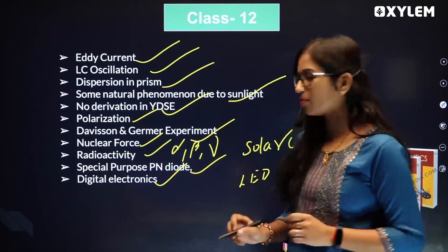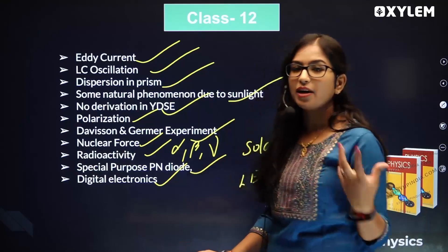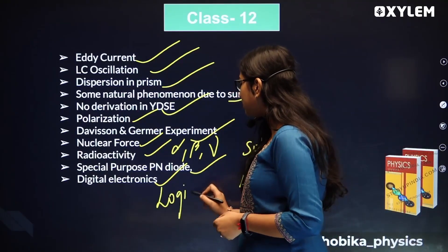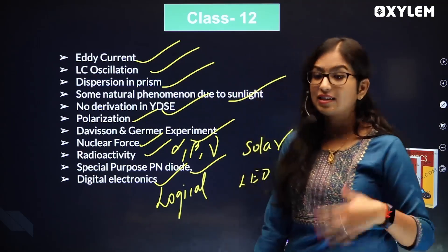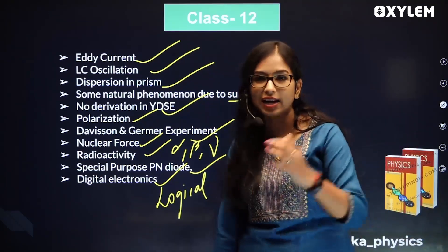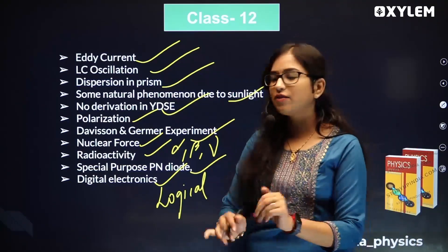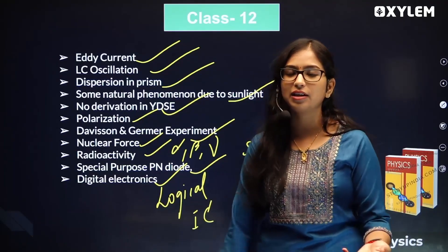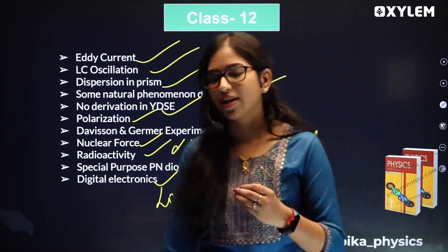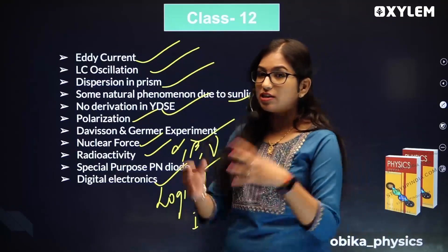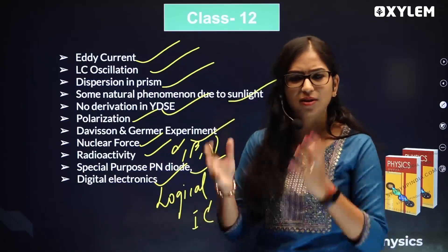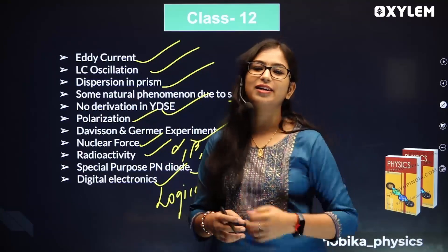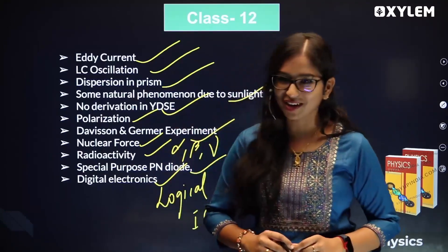Special purpose diodes are deleted. Digital electronics - including logical circuits, logic gates, transistors, AND gate, and integrated chips - are all deleted. Communication system is also deleted. The entire communication system unit is deleted.